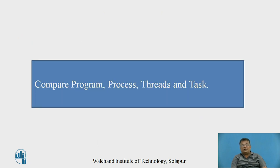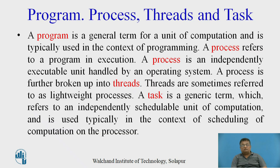Now pause the video and compare: program, process, threads, and task. A program is a general term for a unit of computation, typically used in the context of programming. A process refers to a program in execution — an independently executable unit handled by an operating system. A process is further broken up into threads, which are sometimes referred to as lightweight processes. A task is a generic term referring to an independently schedulable unit of computation, typically used in the context of scheduling computation on the processor.